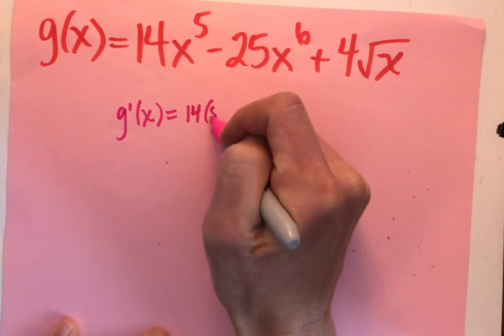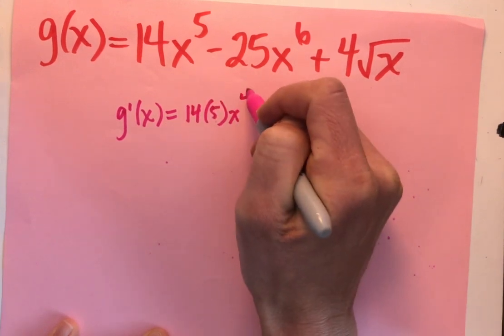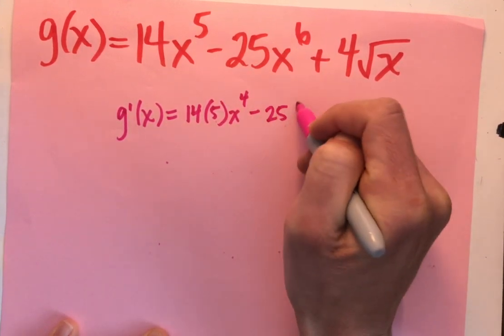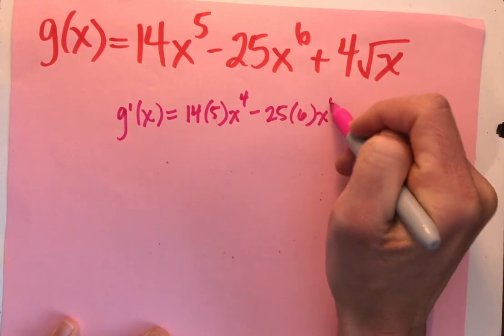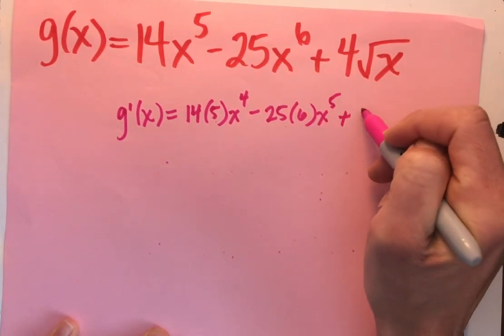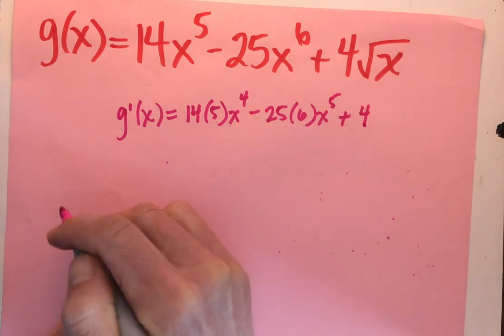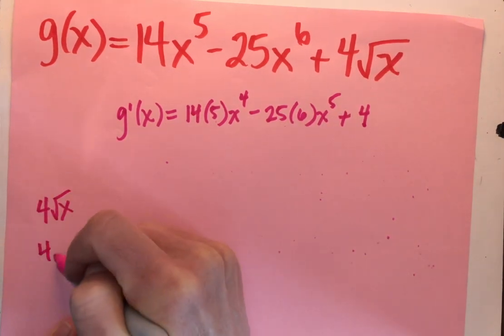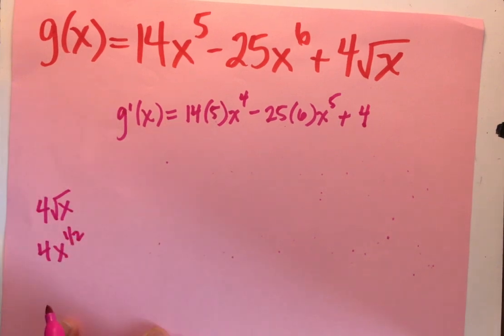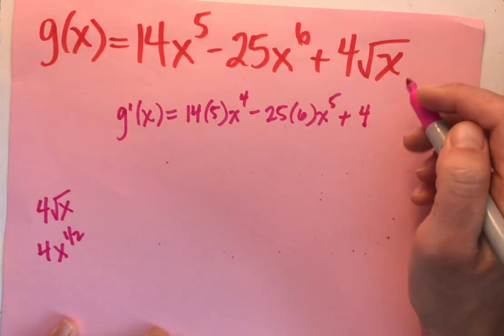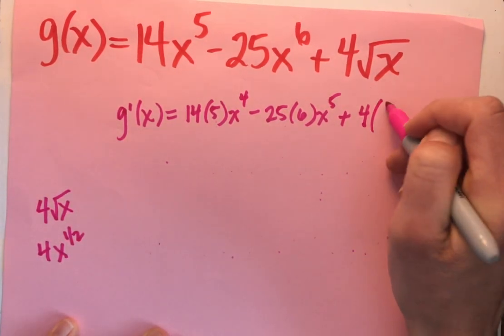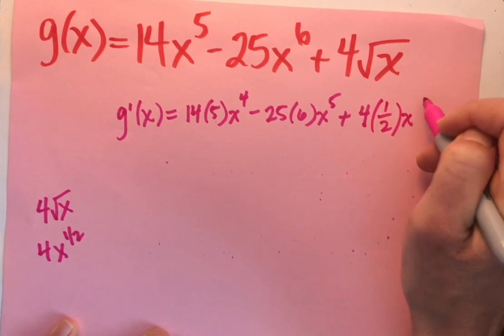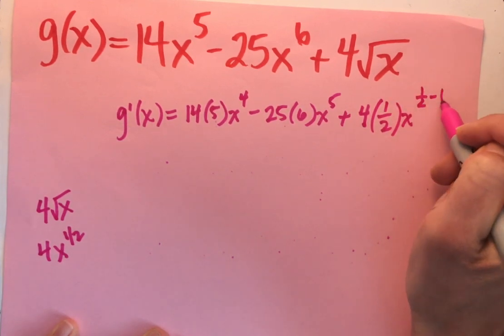Let's see, I've got 14 times 5 x to the 4th minus 25 times 6 x to the 5th plus 4. I'm going to come over here. I got a little excited. 4 times the square root of x is 4 x to the 1 half. So that's going to be 4. If I take the derivative, 4 times 1 half x to the 1 half minus 1.